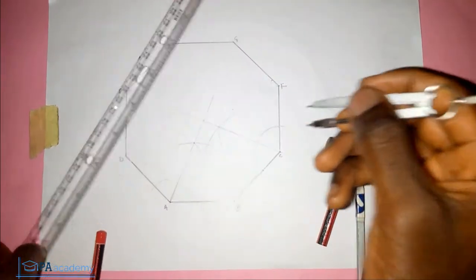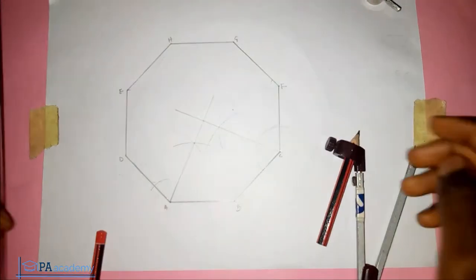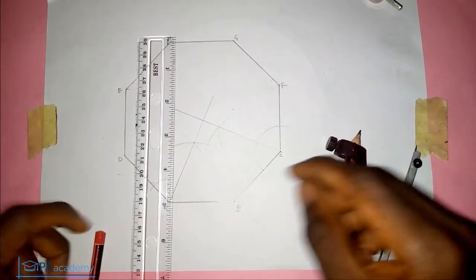You can see that these two lines are meeting at this point. That represents the center of the circle that we're going to inscribe inside this octagon.